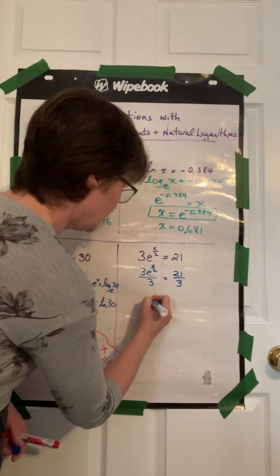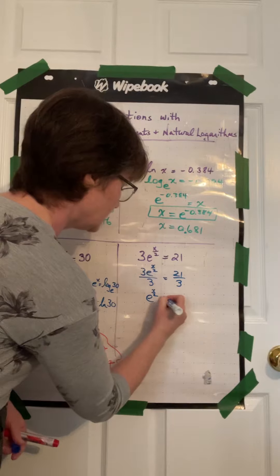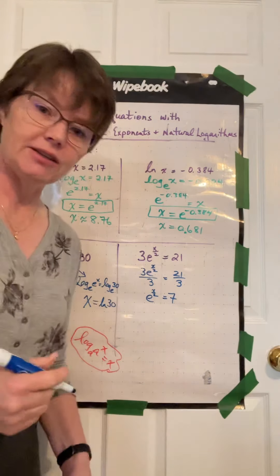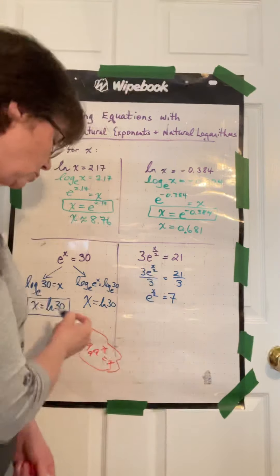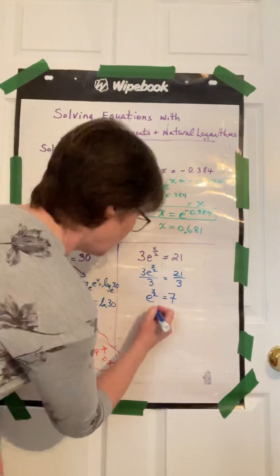And then that gives us e to the power of x over 2 equals 7. This is a lot easier to deal with. We can now choose one of these methods over here. I'll show you both ways.